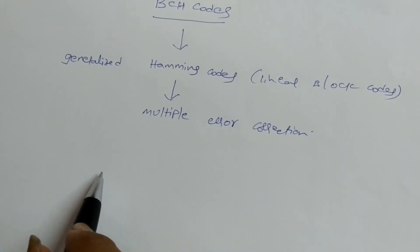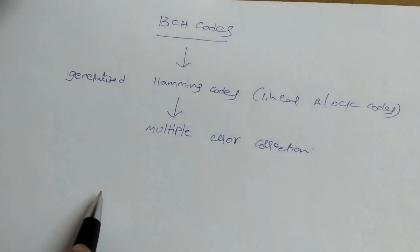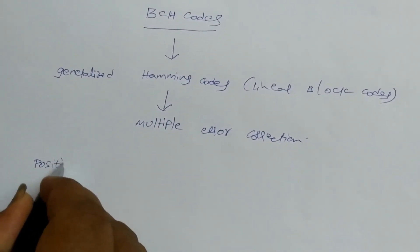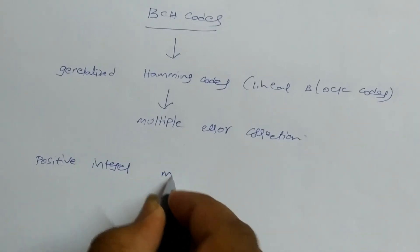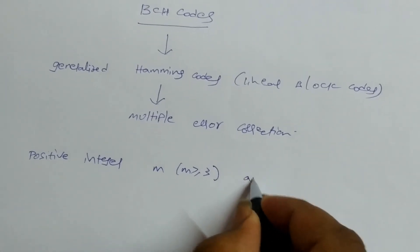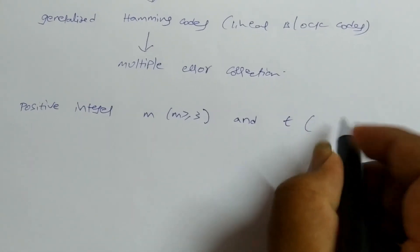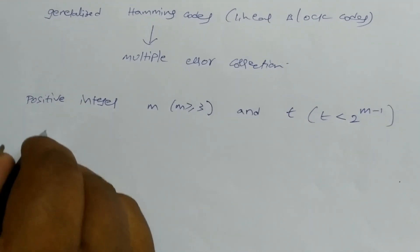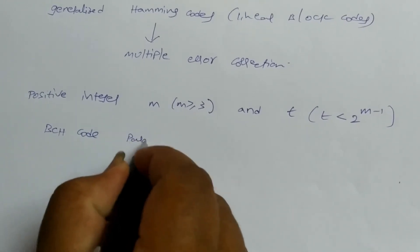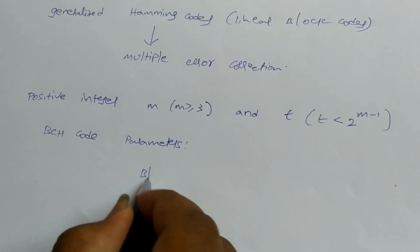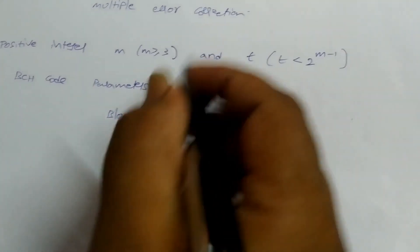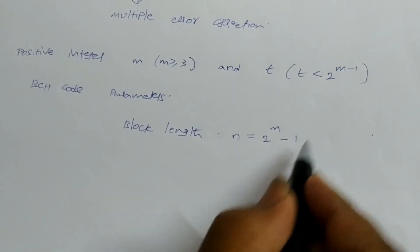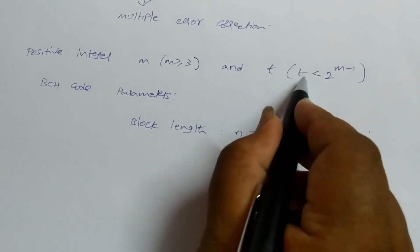Similar to Hamming codes, BCH codes require certain parameters. The very important parameter is a positive integer m, which must be greater than or equal to 3. The number of errors to be corrected, t, must satisfy t less than 2 to the power m minus 1. The block length n is equal to 2 to the power m minus 1.